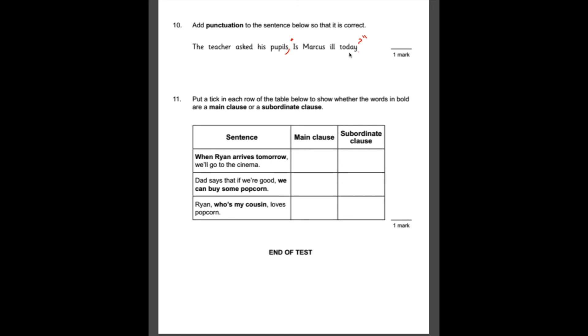Number 11, put a tick in each row of the table below to show whether the words are main clauses or subordinate clauses. You should know that a main clause can stand by itself. It makes sense entirely by itself. And a subordinate clause is the part of the sentence which doesn't make sense by itself. But it's really useful to add extra detail to the main clause. So what we need to do is read the bit in bold and say, well, does it make sense by itself? If it does, it's a main clause. If it doesn't, then it's a subordinate clause. The first one, when Ryan arrives tomorrow. That doesn't make sense by itself. Second one, Dad says that if we're good, we can buy some popcorn. So we can buy some popcorn. That does make sense by itself. So it's a main clause. And the last one, Ryan, who's my cousin, loves popcorn. So in this case, they've actually put something called an embedded clause in. And what an embedded clause is, is it's a subordinate clause, but it's in the middle of the sentence rather than at the beginning or at the end. So that's trying to catch you out. But because it still doesn't make sense by itself, who's my cousin, doesn't make sense. It is a subordinate clause.